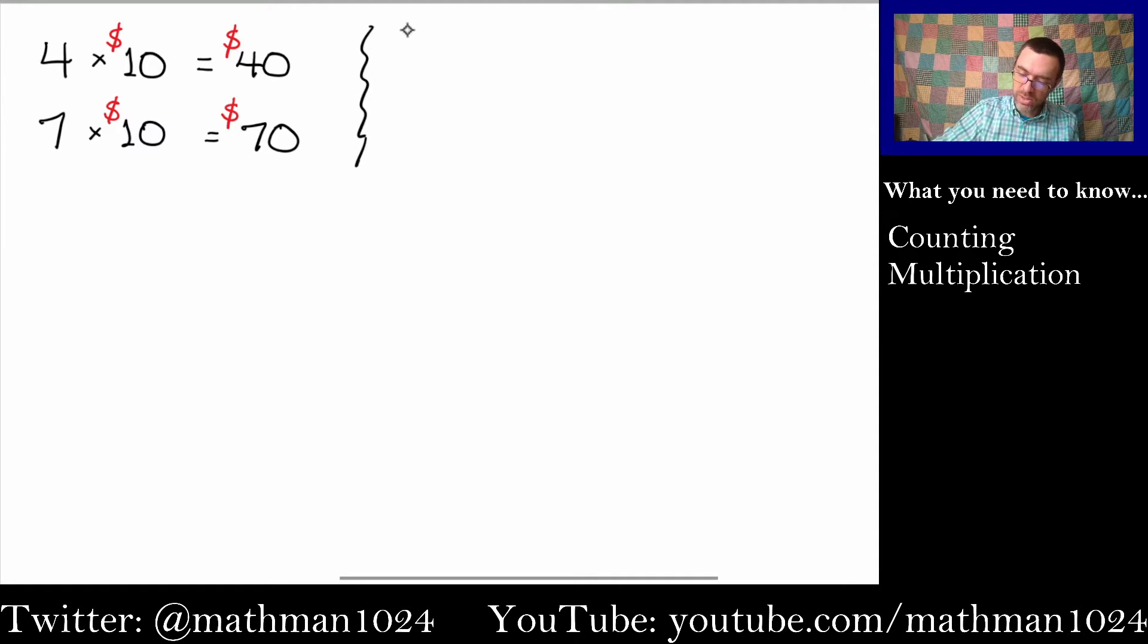We can do this with multiplication of higher powers of 10. I can do times 100. So 4 times 100 would be 400. And again, think about this in terms of money. Suppose you have four $100 bills, like everybody does just laying around, right? Well, that means you have $400.